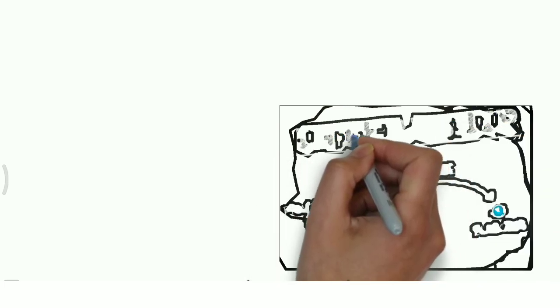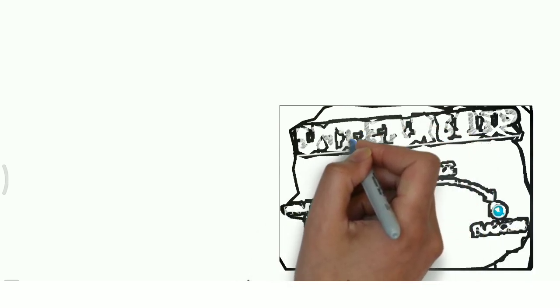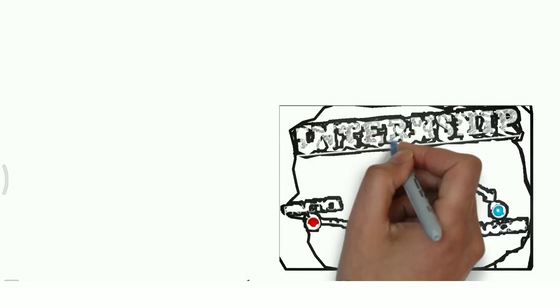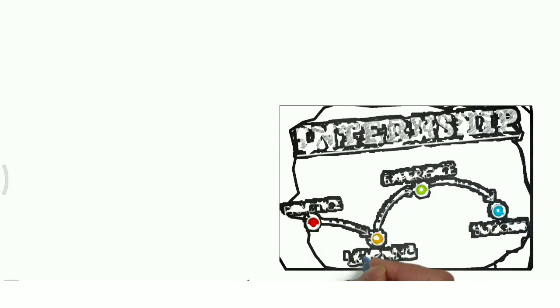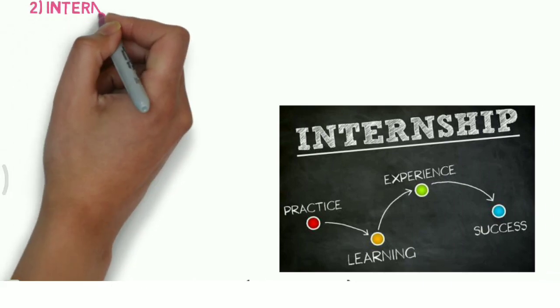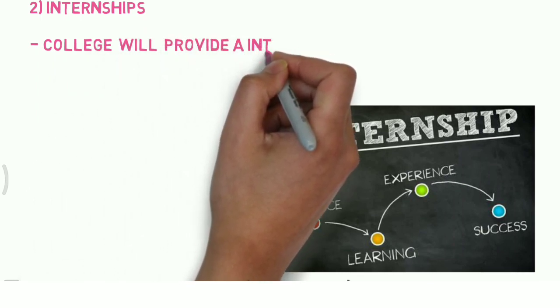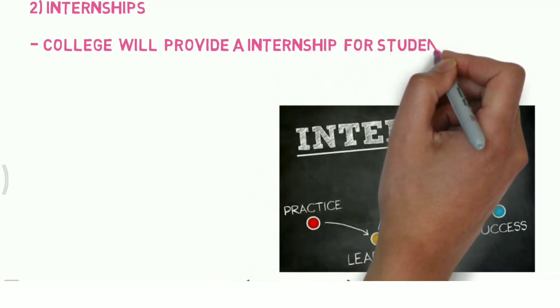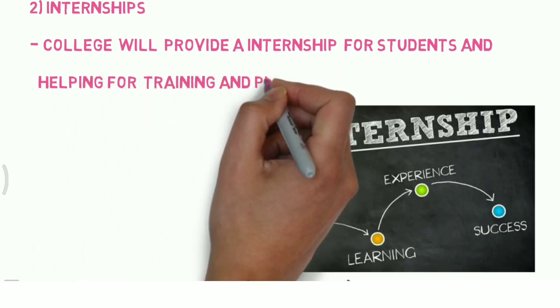The next rule is the internship rule. Earlier, students of engineering had to approach on their own for internships — they wrote their resumes and did everything by themselves. Now this will be done by the institute or college itself. They're going to help students get internships, teach them how to write resumes, send their resumes, and provide internship opportunities. In return, students will get certified, and this will help in placement.